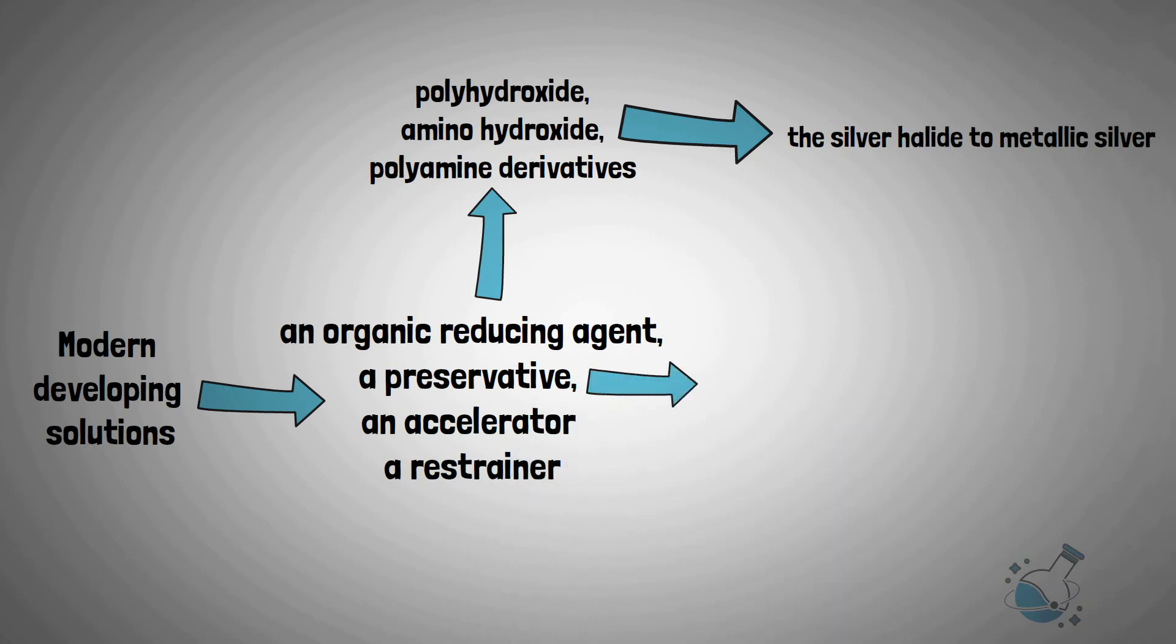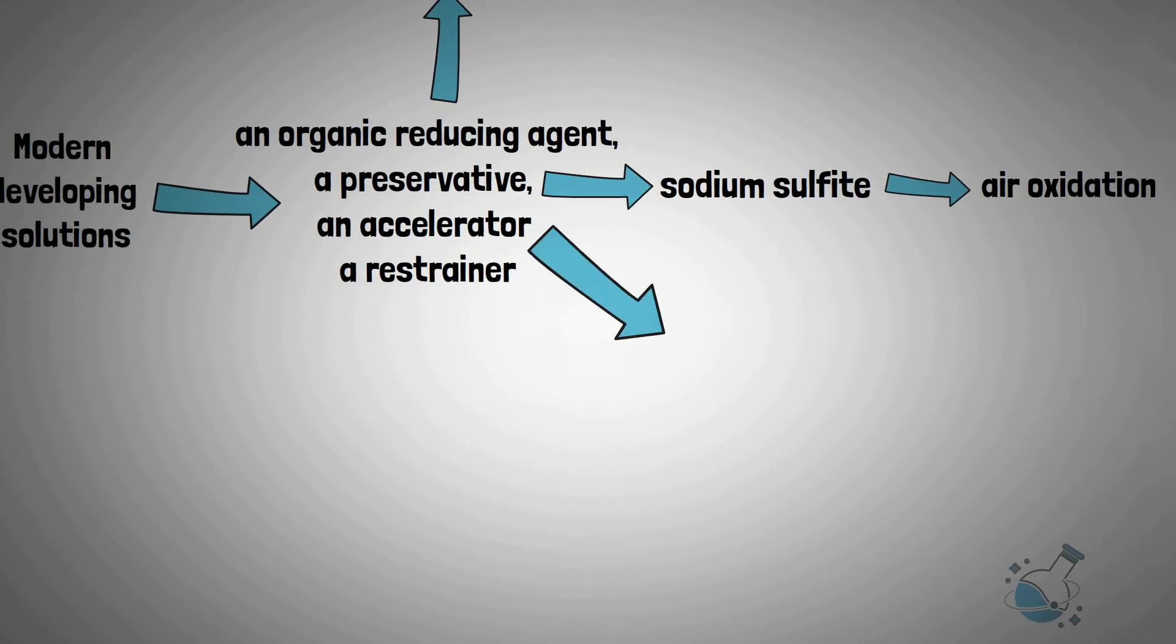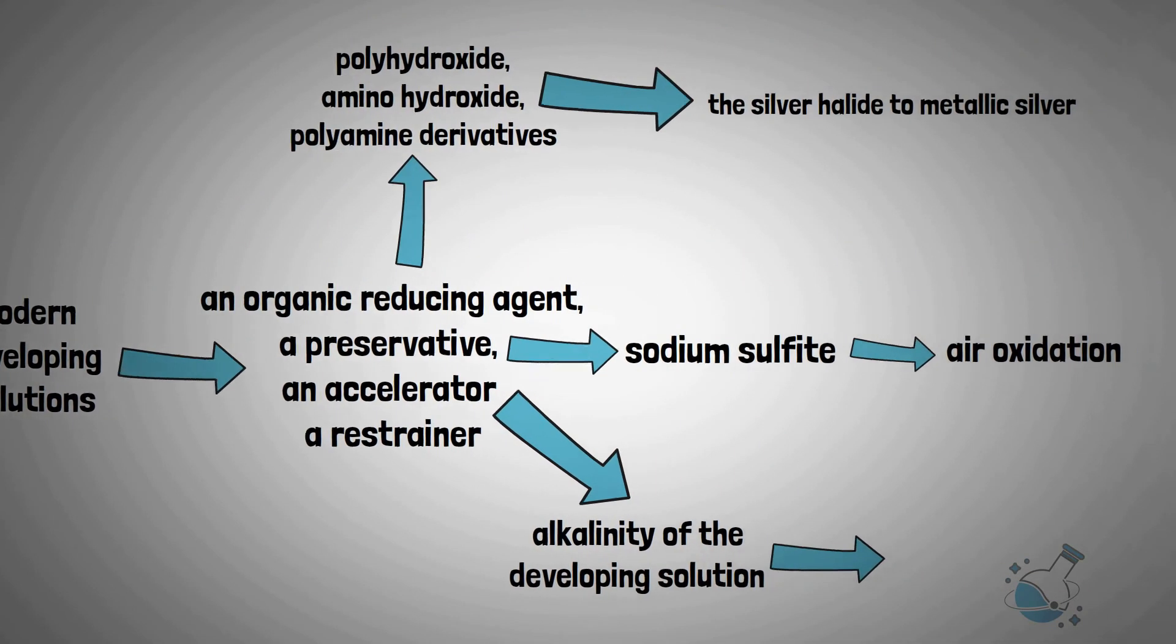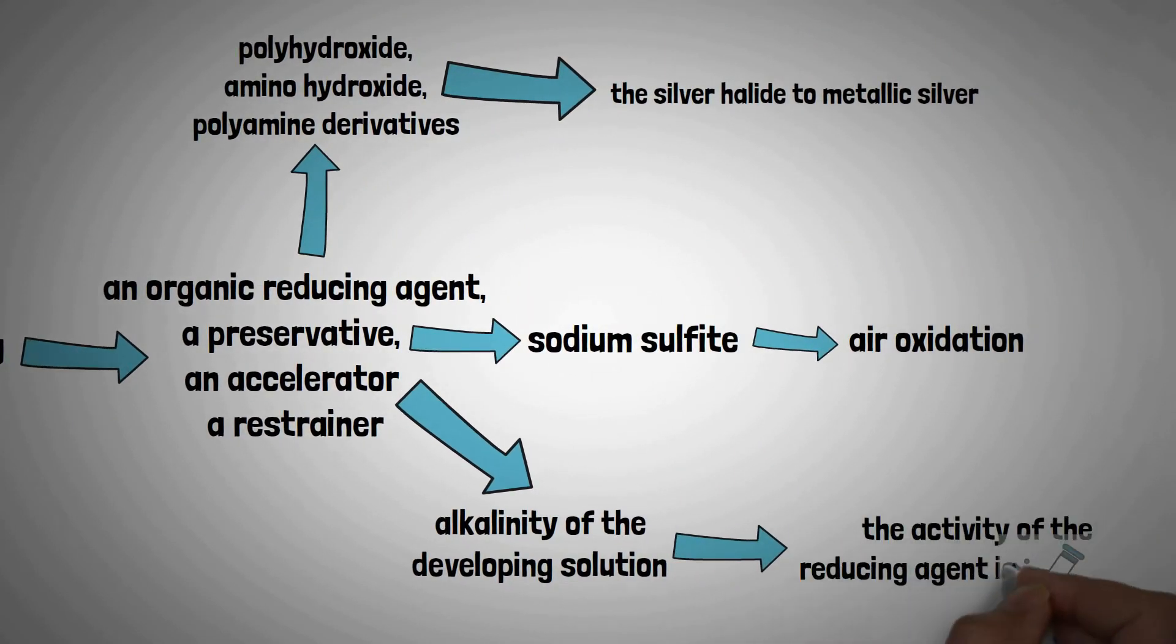Preservatives guard the developer against air oxidation. The most common preservative used is sodium sulfite. Accelerators increase the alkalinity of the developing solution. Eventually, the activity of the reducing agent is increased.